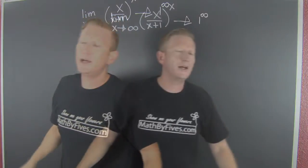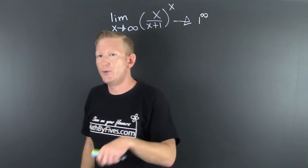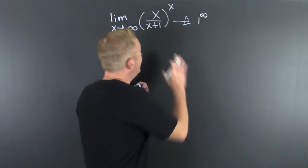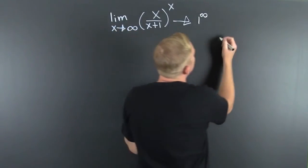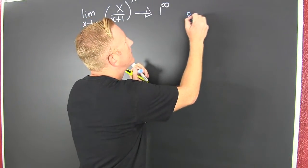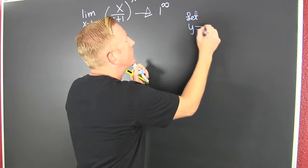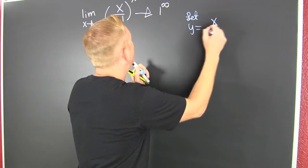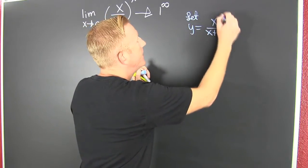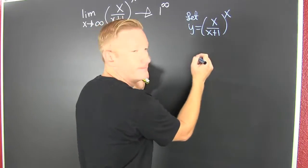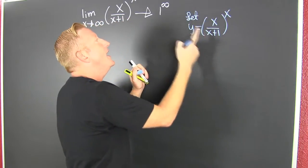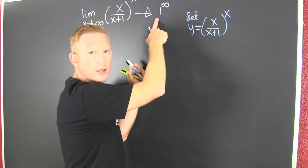So that's one to the infinity power and that's an indeterminate form. So how do I determine what that limit is? Well, I want to use L'Hôpital's, but in order to get it there, I have to change the form. So let's let Y equal X over X plus one to the X power. When I have that form, I'm going to use log.